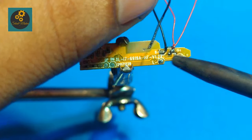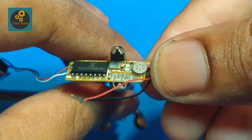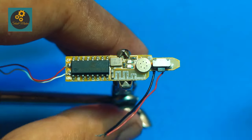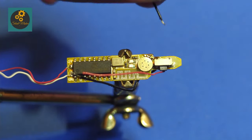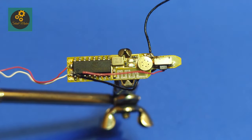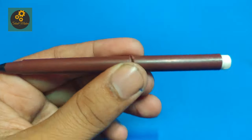Now our circuit is completed. Now we only have to make the outer casing of this torch.